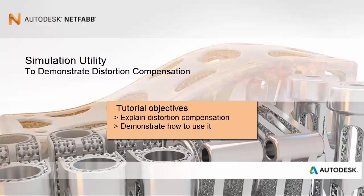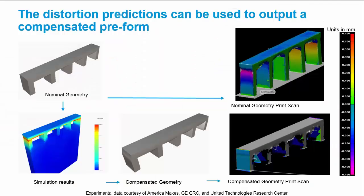The concept is shown on this slide where we see the nominal geometry that we want to build, but when we actually build it, it distorts into a different shape shown on the right, especially where the top piece joins the outer legs.